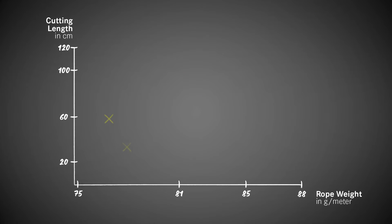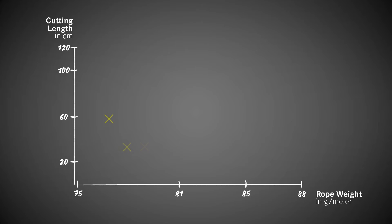Next, we're going to look at the weight of the rope. The argumentation is: the more material I have, the better the cut resistance. Let's look at the values and hold them against the grams per meter for each rope. Again, we can't really see a clear correlation — that the more material, the better. There are values that differ greatly, with a high cutting value although the rope weighs much less than another. And there are different cutting values for the same weight. So it's not something very reliable either.